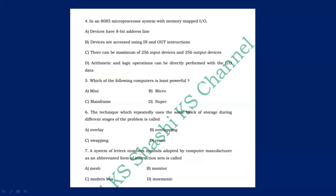A system of letters, numbers, and symbols adopted by computer manufacturers as an abbreviated form of instruction sets is called? The answer is option D: mnemonic. A mnemonic is an acronym or word used to represent the different types of instruction sets used by different types of processes.